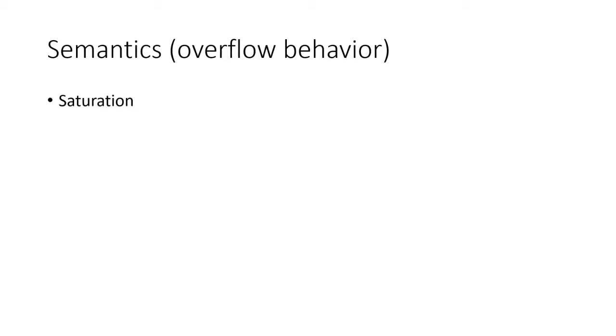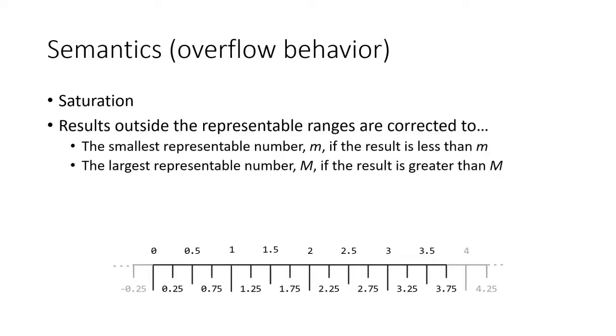The saturation overflow mode corrects out-of-range results to the endpoints of the interval. If the result is less than the representable range, then the result is corrected to the smallest representable number. In this example, the result negative 0.25 is corrected to 0. If the result is greater than the representable range, then the result is corrected to the maximum number. In this example, 4.0 is corrected to 3.75. Likewise, 4.25 is also corrected to 3.75.